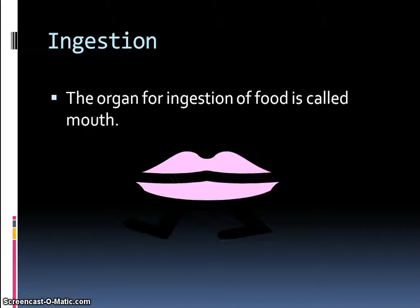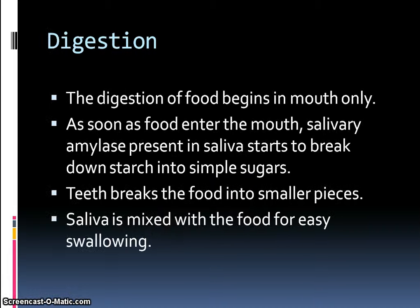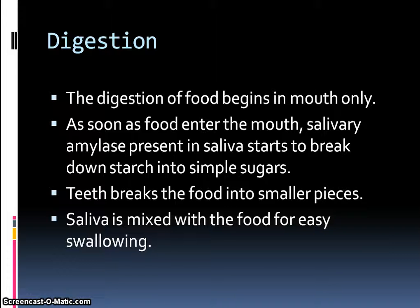The organ for ingestion of food is called the mouth. Digestion of food begins in the mouth. As soon as food enters the mouth, salivary amylase present in saliva starts to break down starch into simple sugars. Teeth break the food into smaller pieces, and saliva is mixed with the food for easy swallowing.